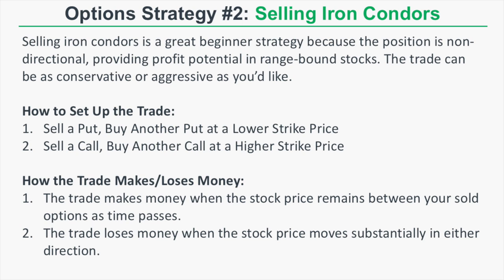Option strategy number two for beginners is selling iron condors. Selling iron condors is a great beginner strategy because the position is non-directional, providing profit potential in range-bound stocks. The trade can be as conservative or as aggressive as you'd like — that's really one of the benefits of trading options, you can make positions very aggressive or very conservative based on your risk preference.